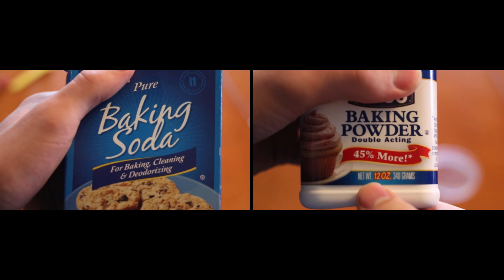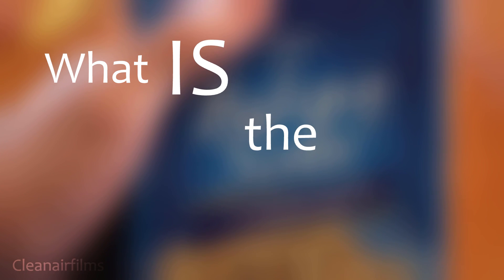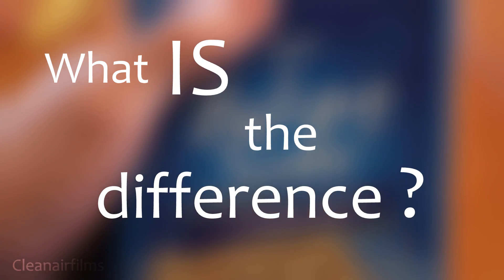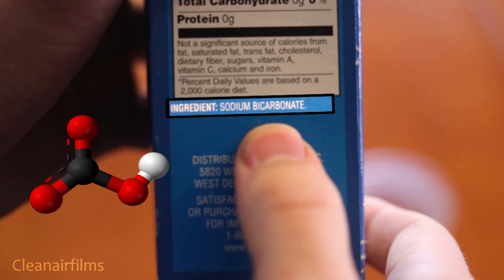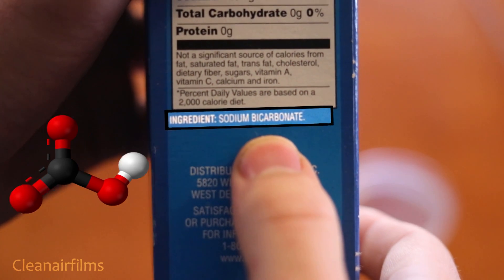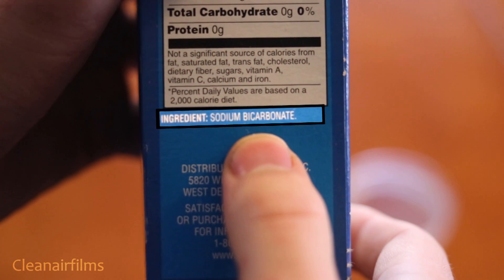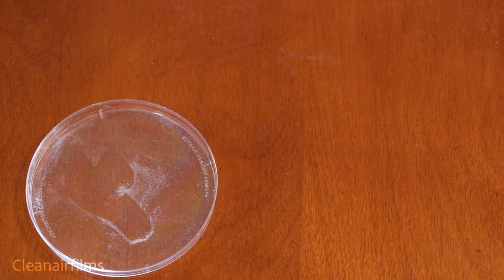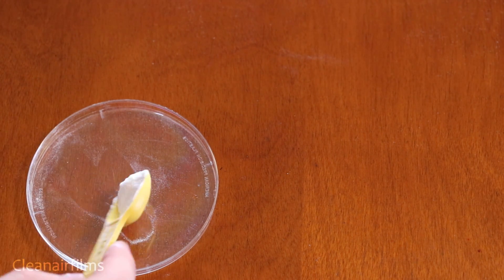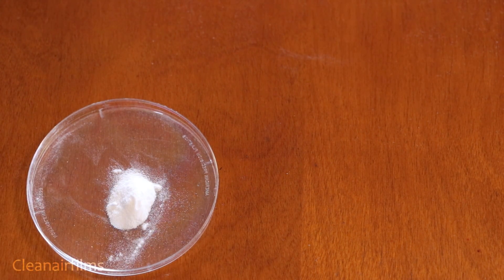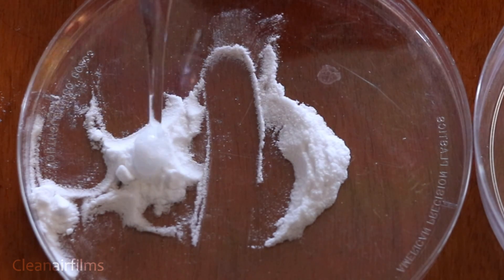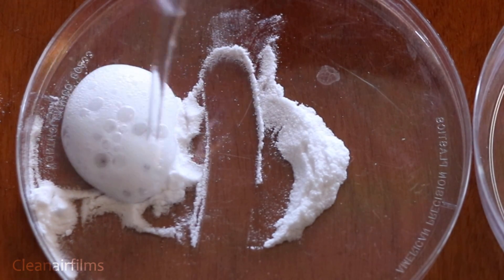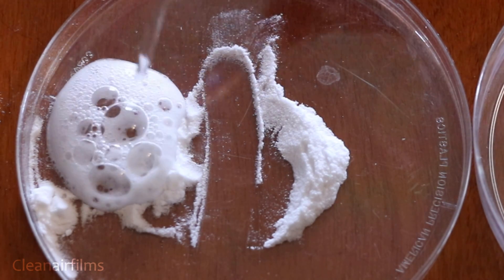The confusion between these products is that each product contains ingredients from the other product. If you look at the back of a container of baking soda, the only ingredient it should contain is sodium bicarbonate. Sodium bicarbonate is a salt that reacts with acids to produce carbon dioxide gas and water. When cooking, the carbon dioxide gas is what causes batters to expand and change texture.